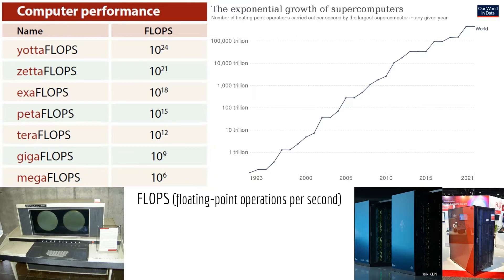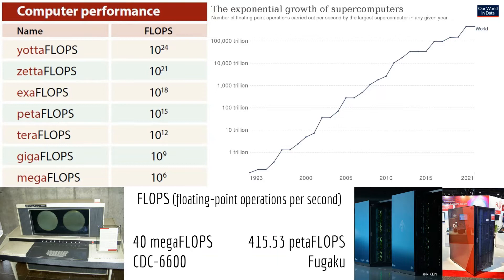The CDC-6600 has a speed of 40 megaflops, which is the entry-level speed. On the other hand, Fugaku has 450 petaflops, which is the mid-level speed in the performance chart.